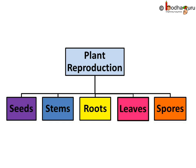So, what are the ways by which plants reproduce? Mainly through seeds. Also by stems, roots, leaves, and spores.